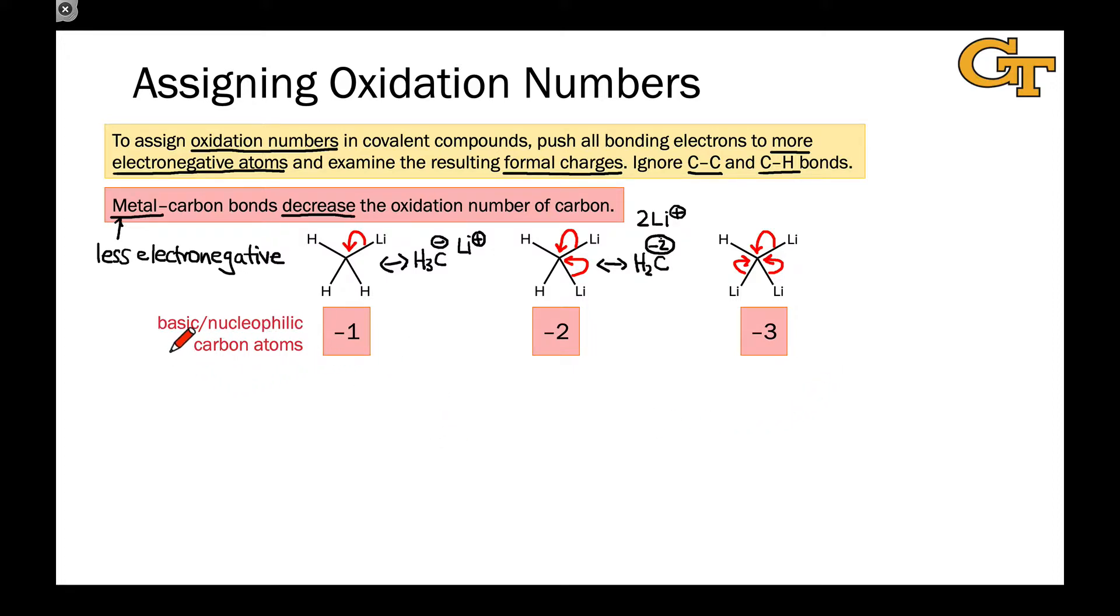So these carbons with negative oxidation number have a huge excess of electron density. This is an idea we'll explore in more detail when we look at organometallic reagents in a future lesson. But the punchline for reactivity is that they are strongly basic and strongly nucleophilic, and they're strong reducing agents.